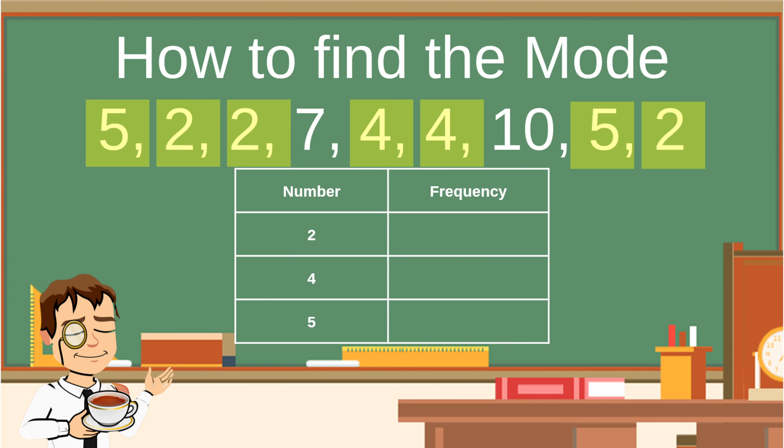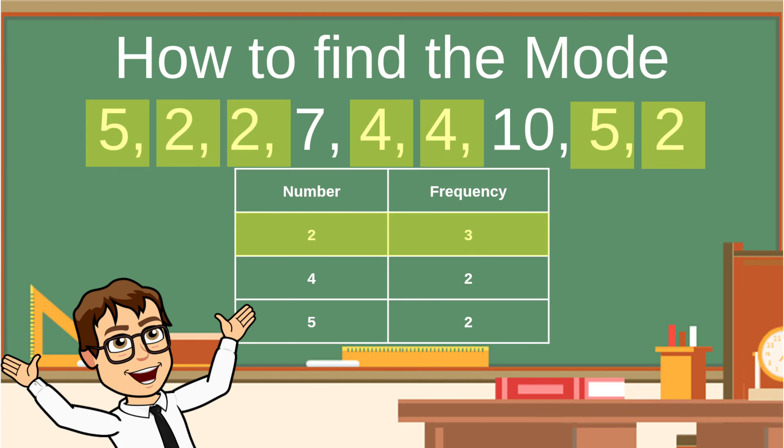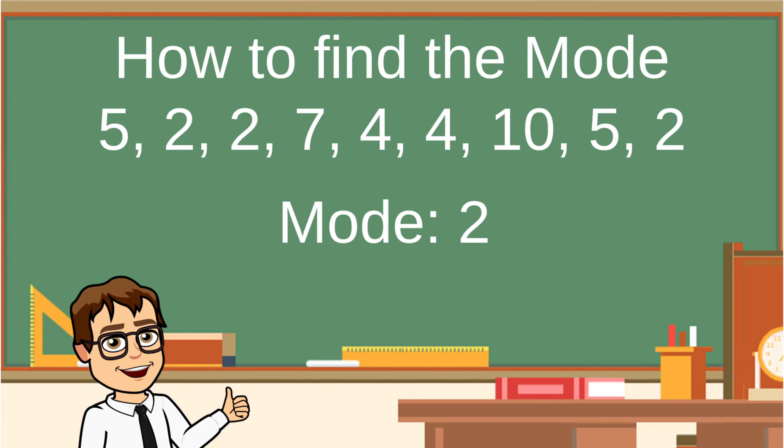Now let's count the frequency of each number. There are three twos, two fours, and two fives. That means that there are more twos than any other number. Our mode is two.